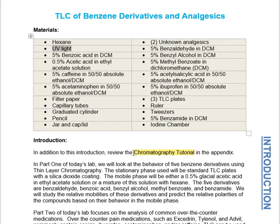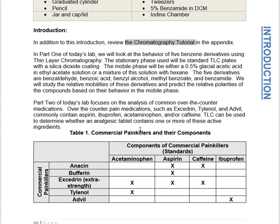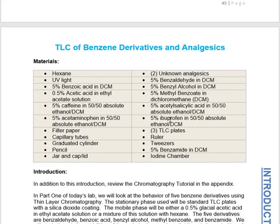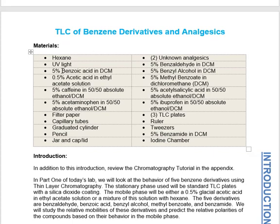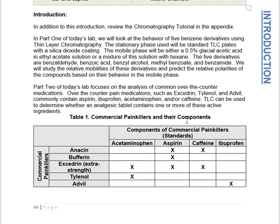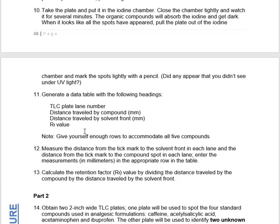You also want to make sure you go through the chromatography tutorial in the appendix. One of the big overall goals in Part One is to practice with known compounds. You'll be working with five specific benzene derivatives: benzoic acid, benzaldehyde, benzyl alcohol, methyl benzoate, and benzamide. All of these have a benzene ring with just one slight modification to their functional group. You'll see how they migrate along the TLC plate and calculate what's called the RF value, or retention factor, for those five compounds.